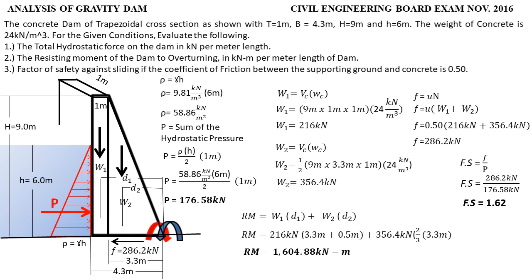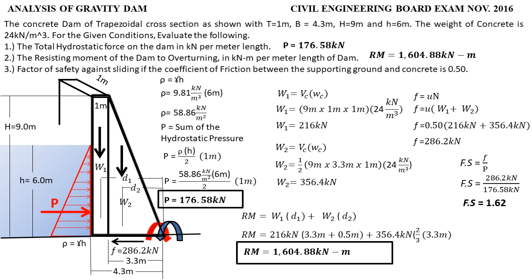Let's have a recap: Number 1 — total hydrostatic force on the dam equals 176.58 kN per meter length. Number 2 — resisting moment of the dam to overturning equals 1,604.88 kilonewton-meters. Number 3 — factor of safety against sliding equals 1.62. That's all for today's topic. If you like this video, don't forget to subscribe and hit the bell button for new engineering tutorial videos. Thank you, and keep safe everyone.